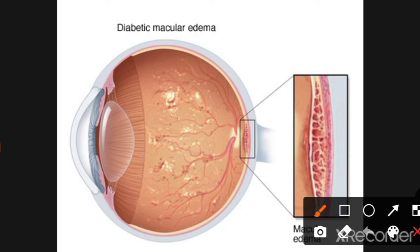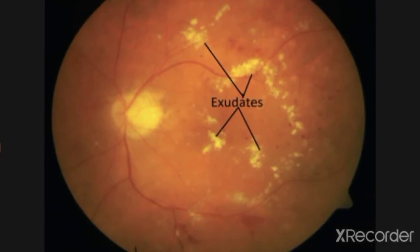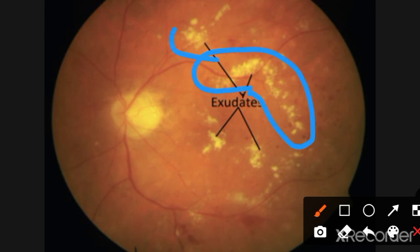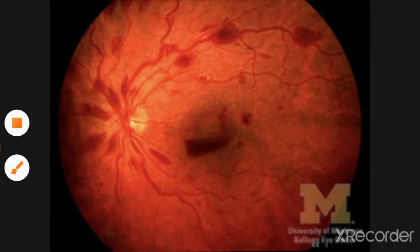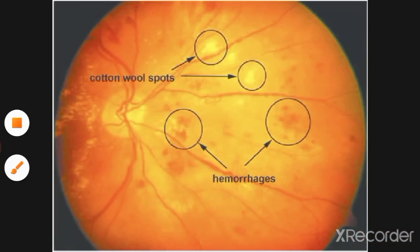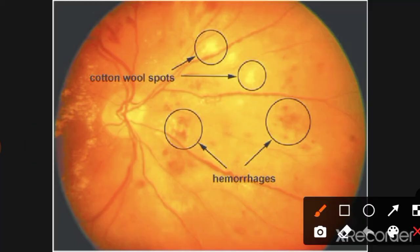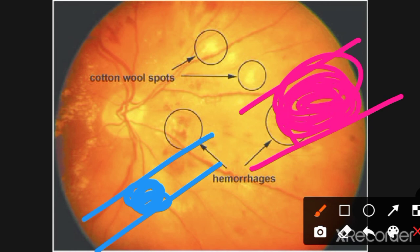From leakage, three things occur: edema, exudates, and hemorrhage. Macular edema is particularly important. Cotton wool spots result from occlusion — the vessel becomes blocked, the nerve loses its blood supply, axoplasm accumulates, and that is why you see cotton wool spots on the retina.